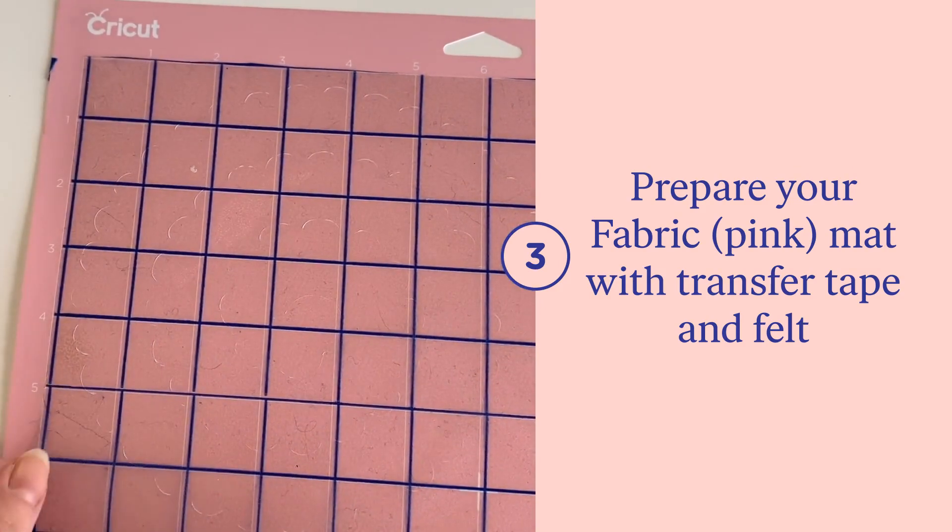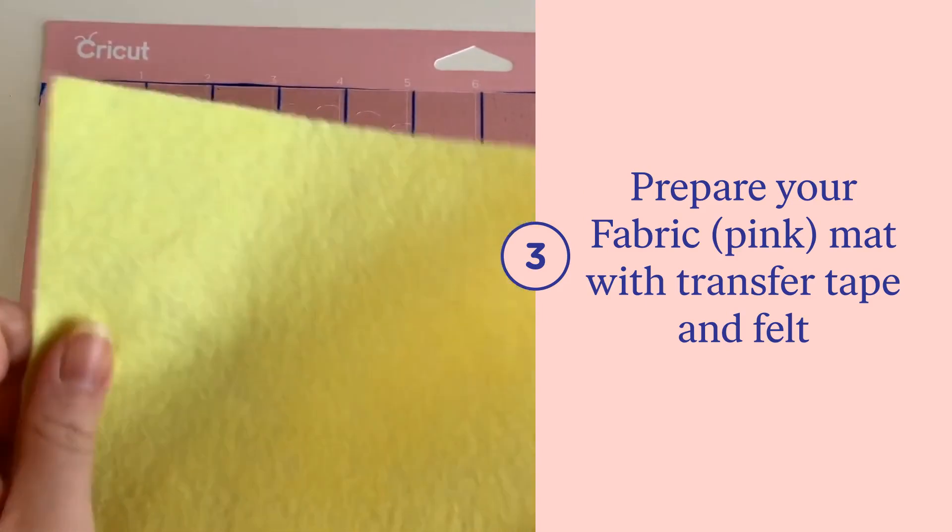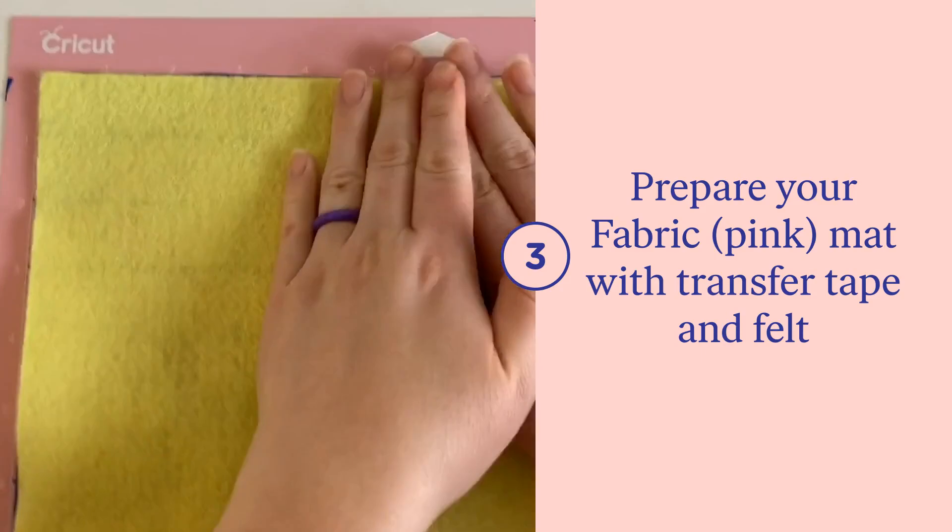Then you want to line up your felt in that upper left-hand corner on top of your transfer tape and make sure that it's secured down and sticking to the transfer tape so that it will cut and stay in place.